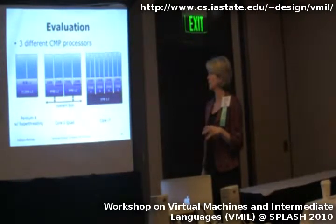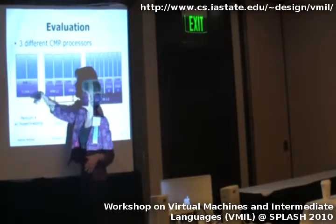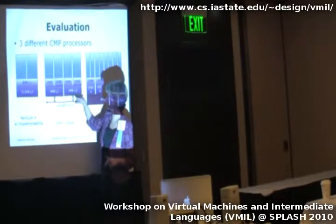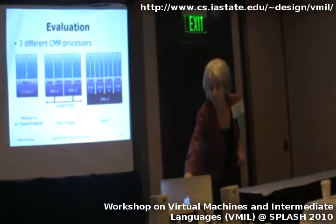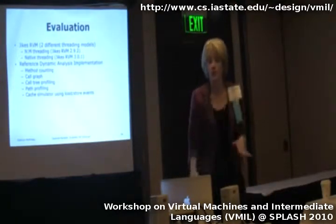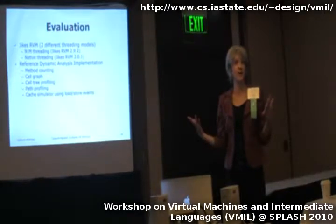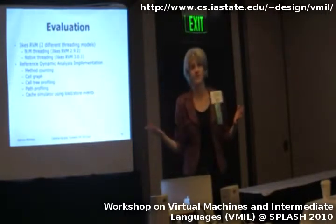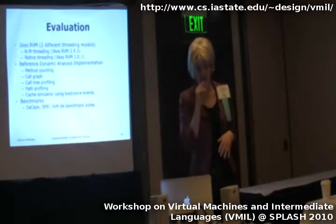We evaluated on three different chip multiprocessor systems: the Pentium 4 with hyperthreading (two hardware contexts, one logical core, shared L1 and L2), the Core 2 Quad (private L1 per core, two cores sharing an L2, no shared cache across all four threads), and the Core i7 (shared cache, uses hyperthreading). We used this for a range of different event types collected in the virtual machine, from method counting — the cheapest kind of data — to something really expensive like cache simulation.